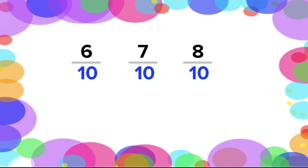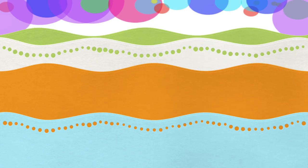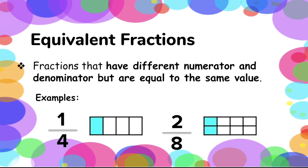The last type of fraction we are going to tackle is equivalent fractions. These fractions have different numerators and denominators, but are equal to the same value — meaning they represent the same proportion of the whole. For example: 1 fourth and 2 eighths. Although they may look different, they are equivalent because their fractional values are just the same.